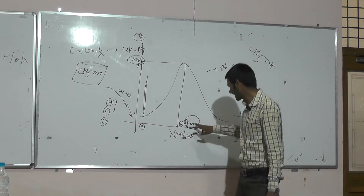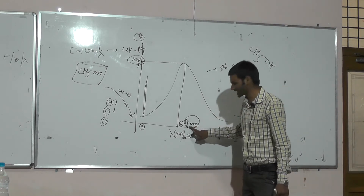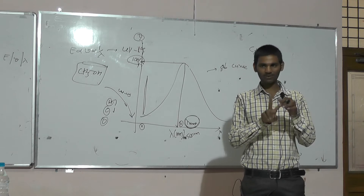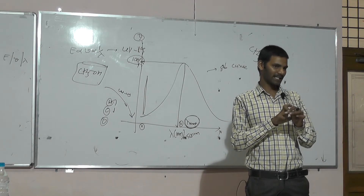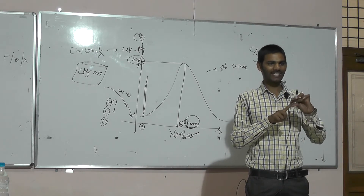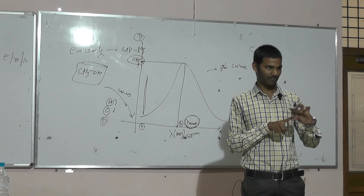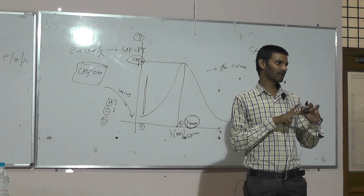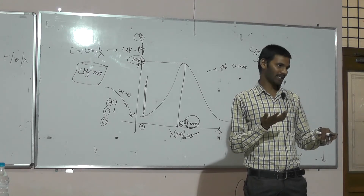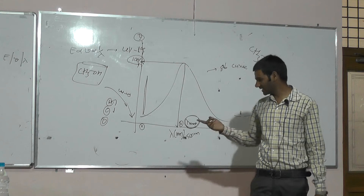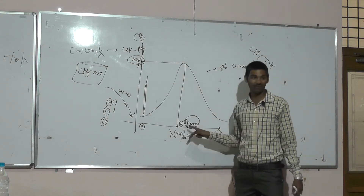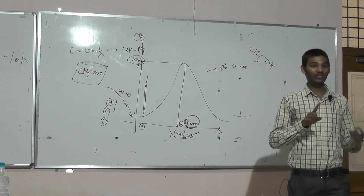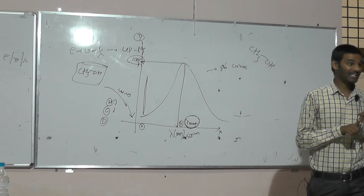Why specifically say qualitative aspect? In analysis there are two types: one is qualitative, another one is quantitative. Qualitative is used for identification purpose, whereas quantitative is used for measurement purpose — to measure the quantity. Lambda max is used for qualitative purpose.